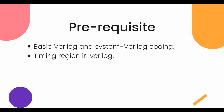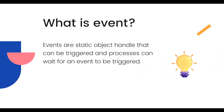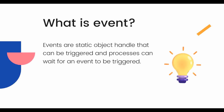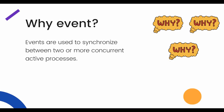So what is an event? Events are basically a static object handle that can be triggered. It is an object handle which doesn't have any memory and can be triggered. The processes which want to use this event can wait for it to be triggered. Events are used to synchronize two or more concurrent active processes.